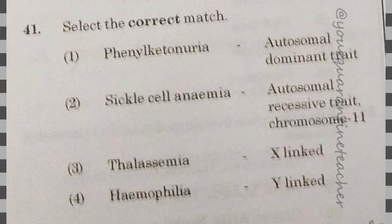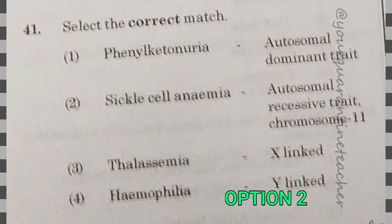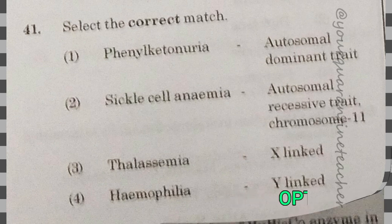41st question: select the correct match. The answer is option 2 — sickle cell anaemia is autosomal recessive, located on chromosome number 1. That is the correct answer.